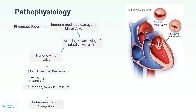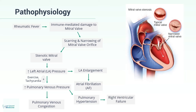Elevated left atrial pressure leads to left atrial enlargement, which can lead to the development of atrial fibrillation, or AFib. Long-standing mitral stenosis can also result in pulmonary hypertension and ultimately right ventricular failure.